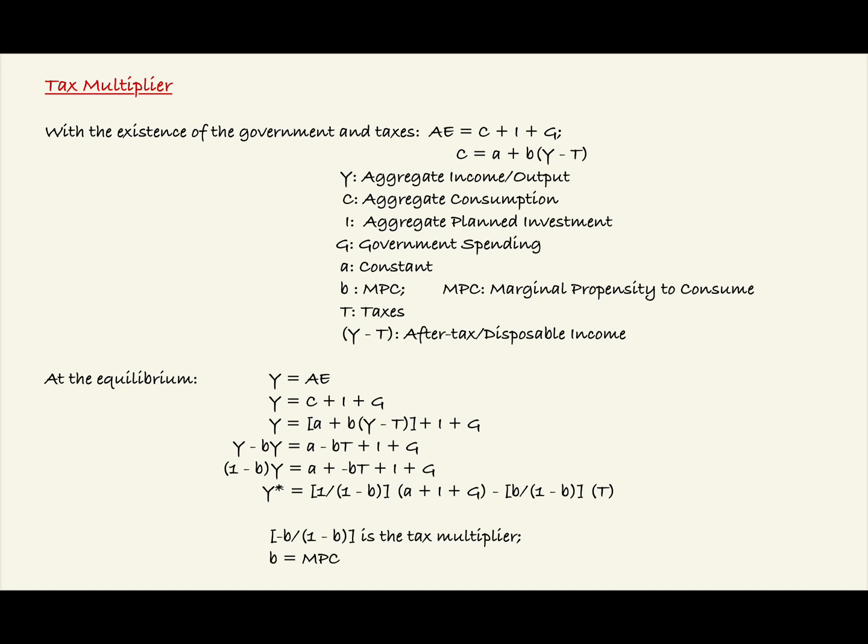After dividing the quantity 1 minus B from both sides of the equation, we find that Y star or the equilibrium aggregate income or output equals the quantity of 1 over 1 minus B times the quantity A plus I plus G minus the quantity of B over 1 minus B times T.